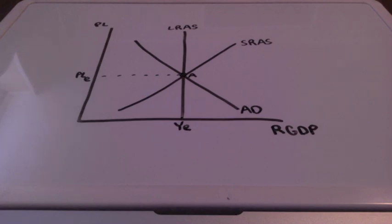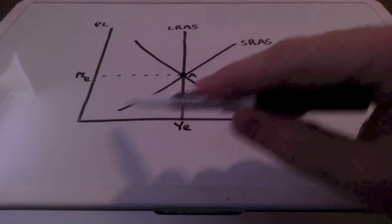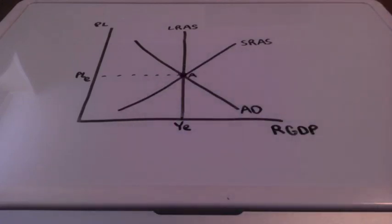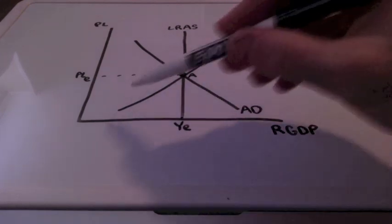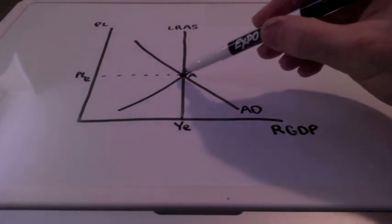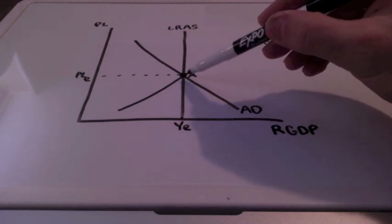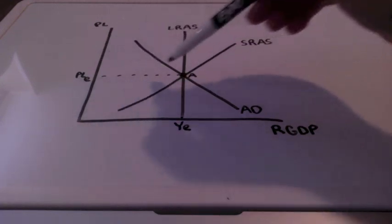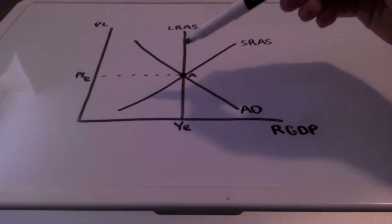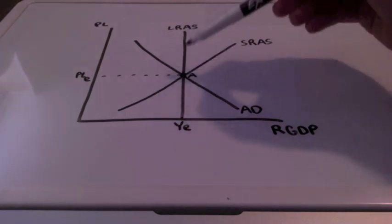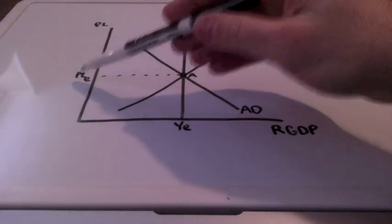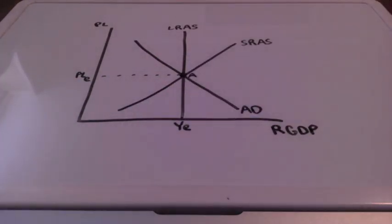In this video lesson we're going to take a look at the macroeconomic model from short run to long run. We have our downward sloping aggregate demand curve, our upward sloping short run aggregate supply curve, and our vertical long run aggregate supply curve. The intersection between all three of these curves is represented by point A, and this represents long run equilibrium at what we call full employment, represented by equilibrium price level and equilibrium GDP.